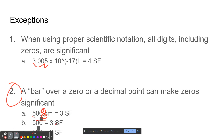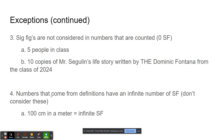And if you have a bar over the last zero, that does the same thing and gives you three sig figs. But if you had a bar over the second zero, it would only be two, because it makes everything significant below and to the left of the bar. The third exception is that sig figs are not considered in numbers that are counted — for example, five people in class would have zero sig figs, and ten copies of a book would also have zero sig figs because these numbers are counted.